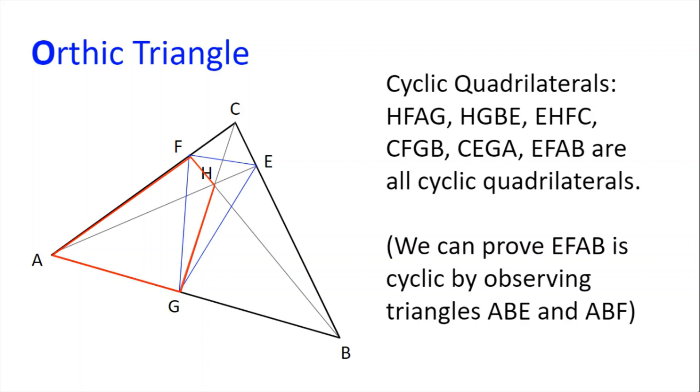The same can be done for HGBE and EHFC. Now we can show that EFAB is a cyclic quadrilateral by observing the right-angled triangles AEB and AFB. We will first look at the circumcircle of AEB. Because it's a right-angled triangle, AB is a diameter of the circumcircle, and the midpoint of AB is the centre of the circumcircle.